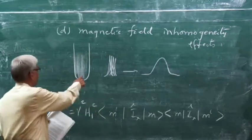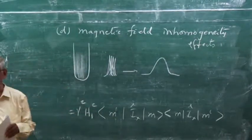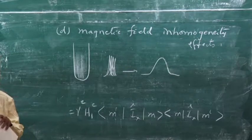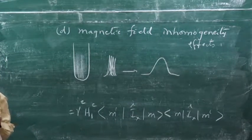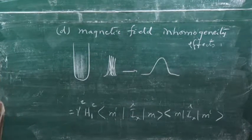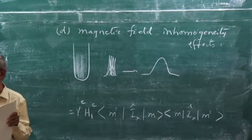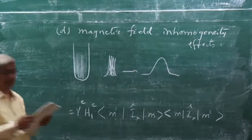You can always improve this by shimming your magnet very well, so that over the sample volume, you have the same homogeneous magnetic field. But those ones, spin-lattice, intrinsic factors, you will not be able to control.